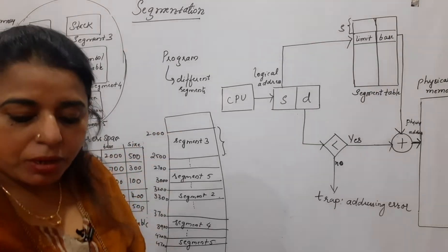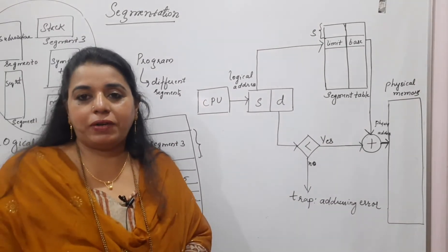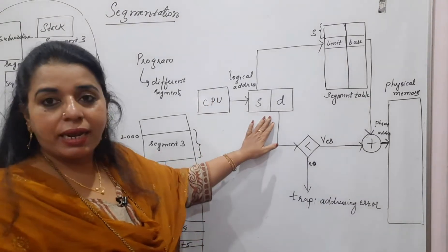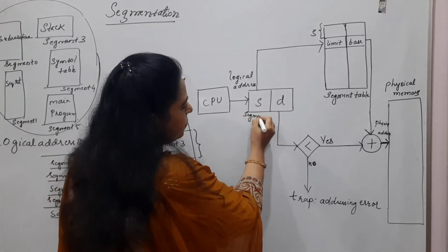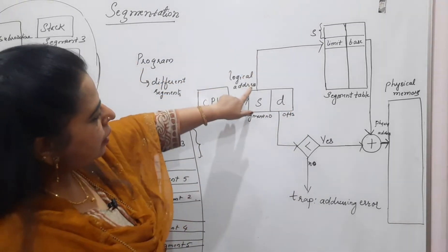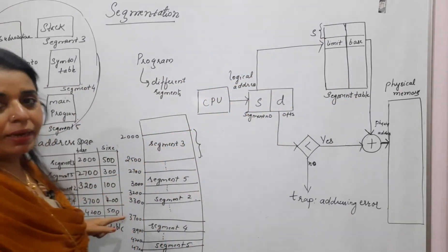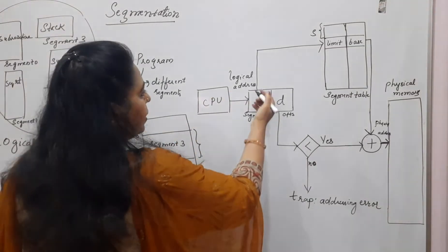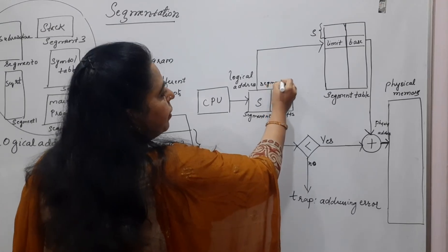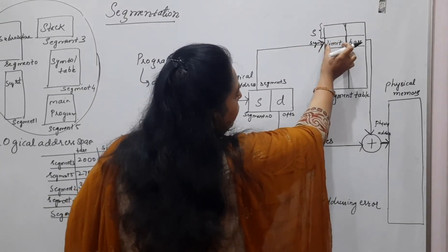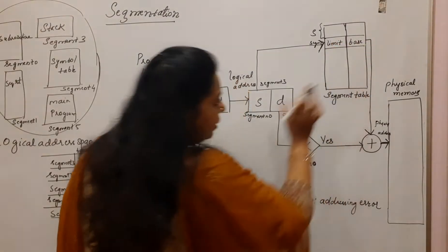The logical address generated by the CPU consists of a segment number and an offset value. In paging, the technique generated a page number and offset. Here, the CPU generates a logical address consisting of a segment number and an offset. The segment number is used to search the segment table, and the segment table gives both the size and the base address for that segment.